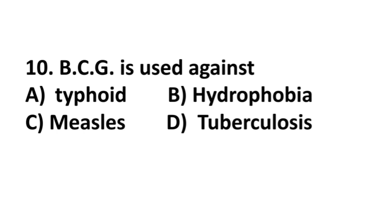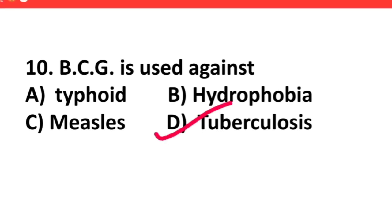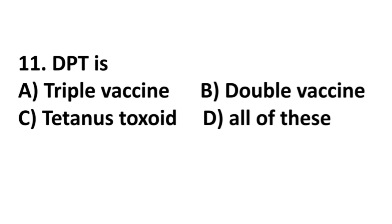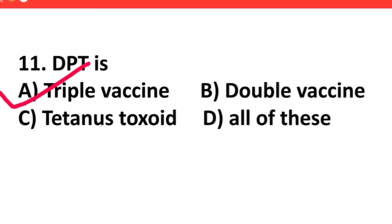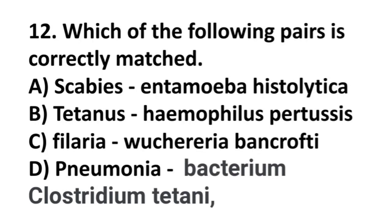Tenth question: BCG is used against A) typhoid, B) hydrophobia, C) measles, D) tuberculosis. The answer is tuberculosis. Eleventh question: DPT is A) a triple vaccine, B) double vaccine, C) tetanus toxoid, D) all of these. The answer is triple vaccine.